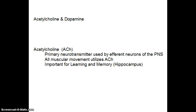For our next online lesson we're going to take a look at two of the neurotransmitters noted in the textbook. There are certainly many more neurotransmitters, neuromodulators, hormones, and other chemicals in the psychopharmacology chapter, but we're going to focus on these two today. The first one is acetylcholine, and we will also look at dopamine in just a minute.